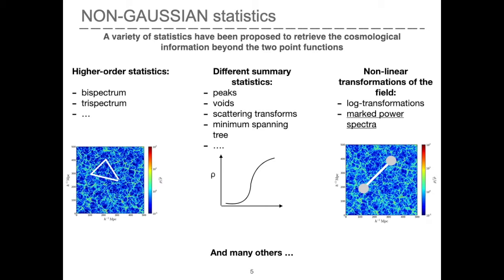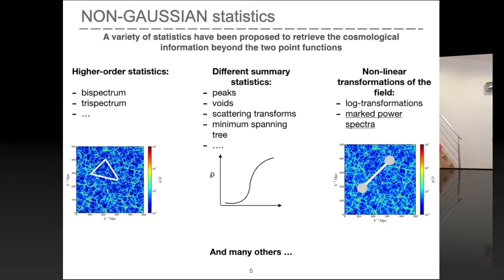Among these are the higher-order statistics, such as bispectrum and trispectrum, and different summary statistics, such as voids and peaks, but also nonlinear transformations of the galaxy field itself. Among this last group are the Mark Power Spectra that are the subject of this talk.